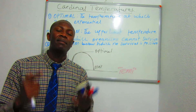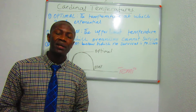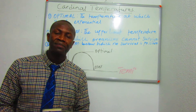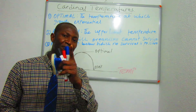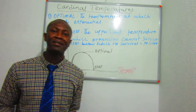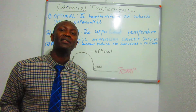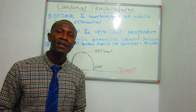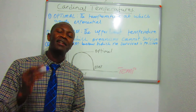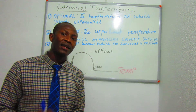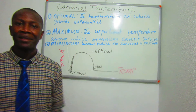To summarize, the three cardinal temperatures are the optimal, the maximum, and the minimum temperatures. Remember that these cardinal temperatures differ from species to species, and even within a species they differ across the life cycle.